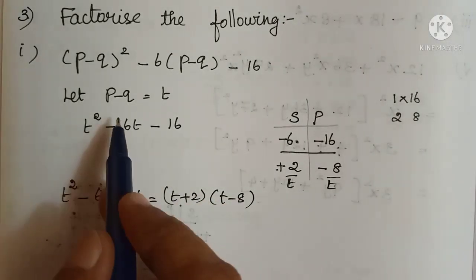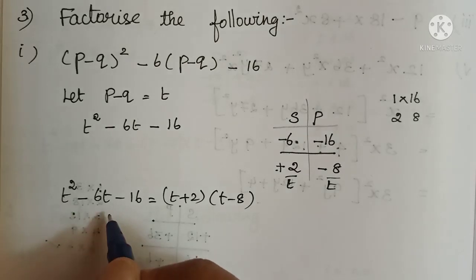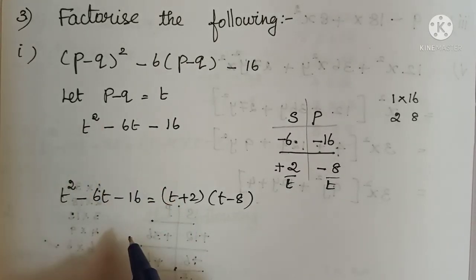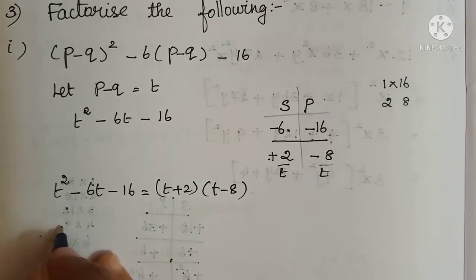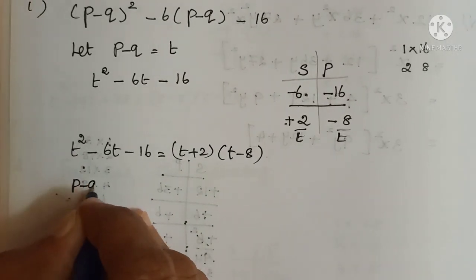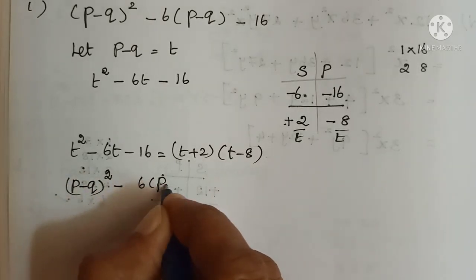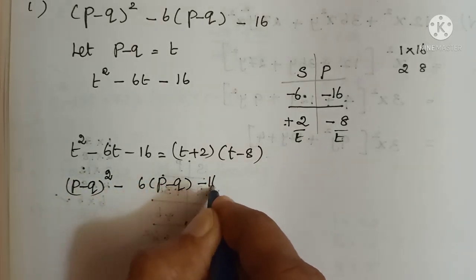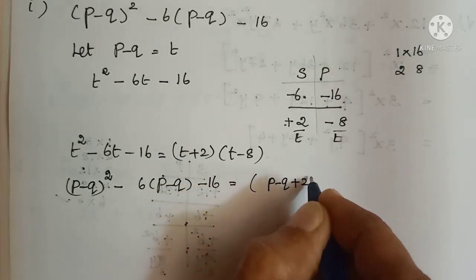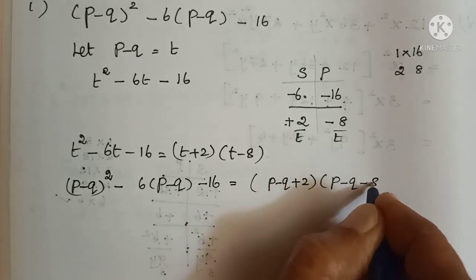We took p minus q as t. So in place of t we are going to replace p minus q. The given expression (p-q) whole squared minus 6 into (p-q) minus 16 equals (p-q+2) into (p-q-8).